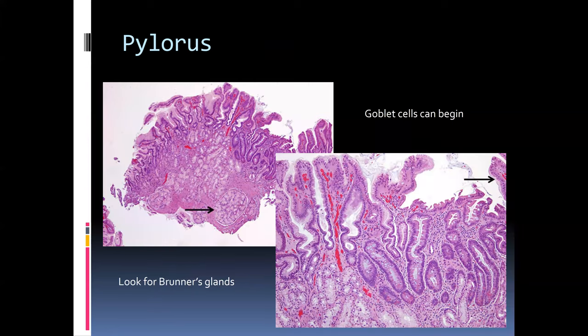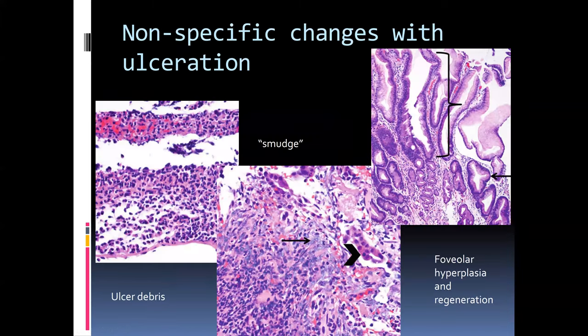As we move a little further, we should expect to begin to see some Brunner's-type glands migrating from within the mucosa down into the submucosal space, and we can expect to begin to see some goblet cells, as highlighted here on this higher-magnification view.